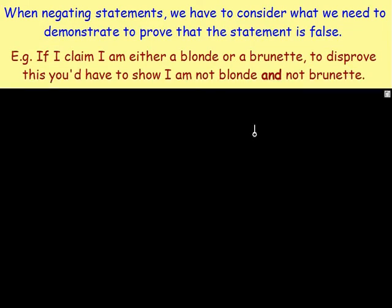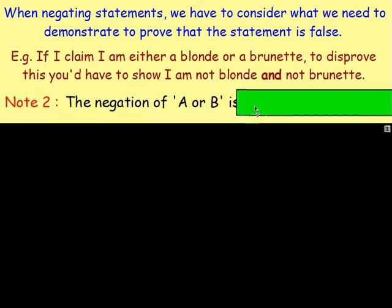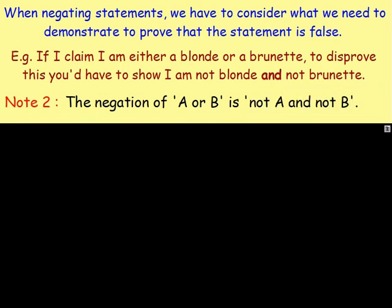Let's consider another scenario. If I told you that I'm either blonde or a brunette, to disprove that you would have to show that I'm not blonde and that I'm not a brunette. I would have to be not blonde and not a brunette in order to disprove it, because the statement says I'm going to be one of them. So Note 2: the negation of 'A or B' is 'not A and not B'.